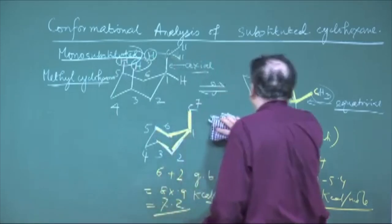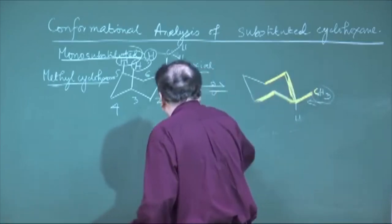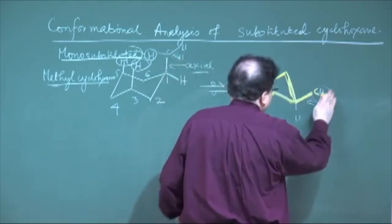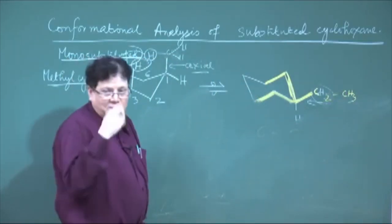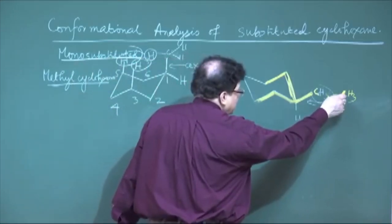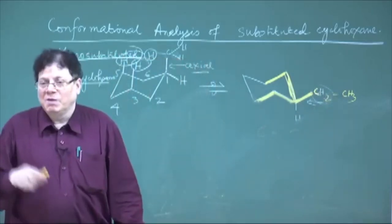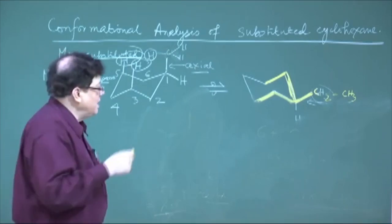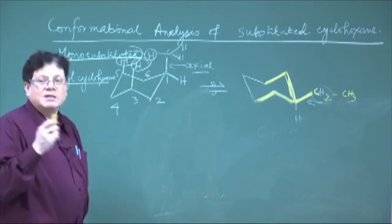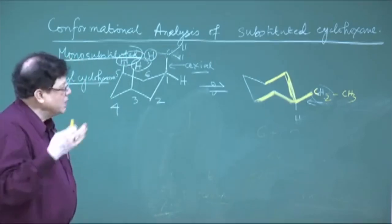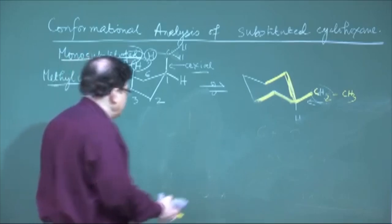We will not go beyond methylcyclohexane here. As an extension, if there is another carbon — say, an ethyl group — the number of extra butane units keeps increasing with each additional carbon. In your analysis you should always identify the number of extra butane units and determine whether they are in the gauche, eclipsed, or anti form, then calculate the energy accordingly.